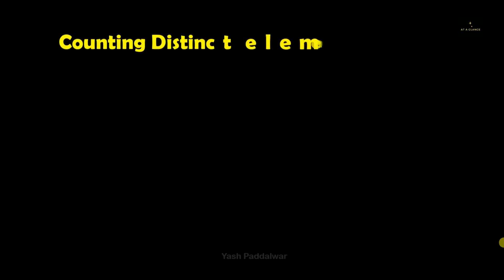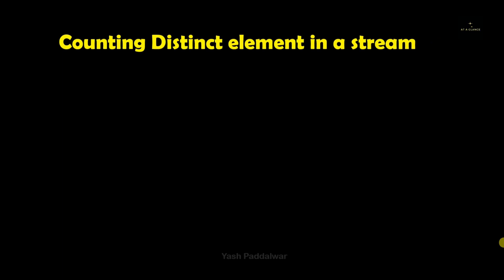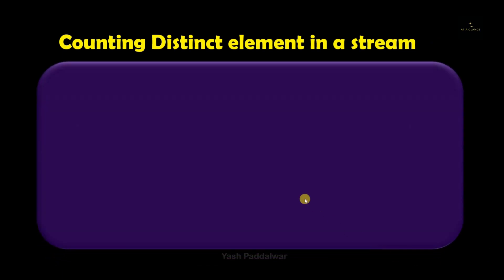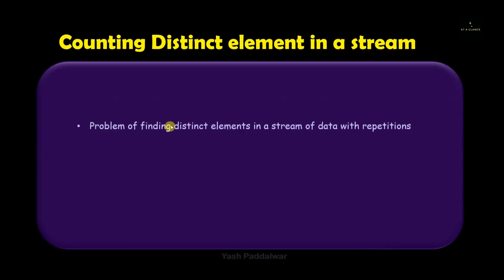Now, many naive algorithms are present for that. But obviously, if you talk about streaming data, we want everything efficient. Hence, in this particular video, we'll be looking at the ins and outs of the very interesting and popular Flajolet-Martin algorithm. And before looking at that, we'll be seeing what this counting distinct elements in a stream problem exactly is.